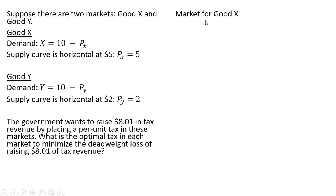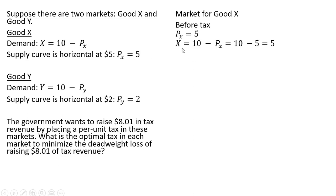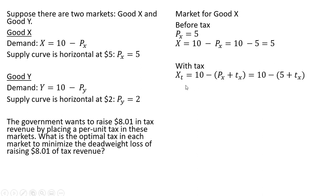So let's start with the market for good X. Before the tax, the price is $5.00. And so the equilibrium quantity, plugging in $5.00 into the demand, gives us 5 units — consumers would buy five units.